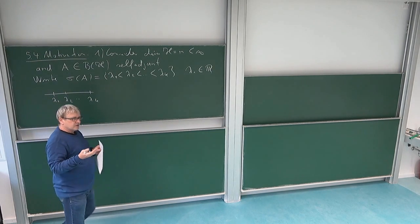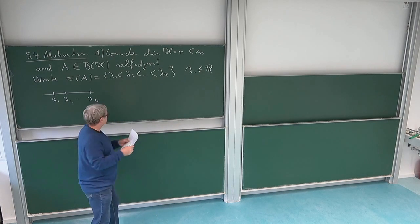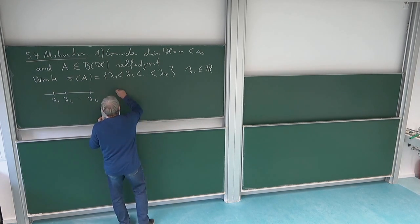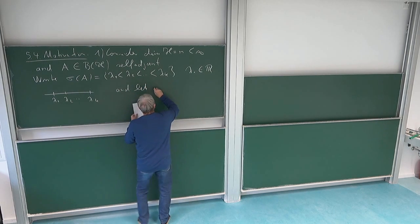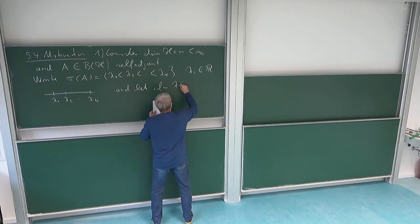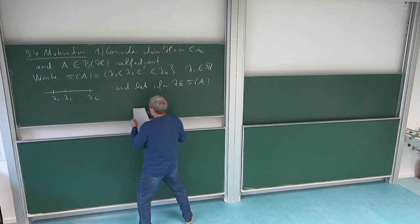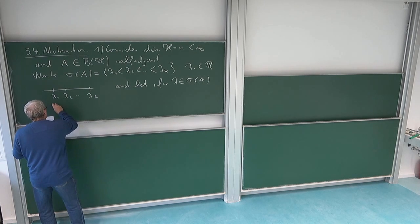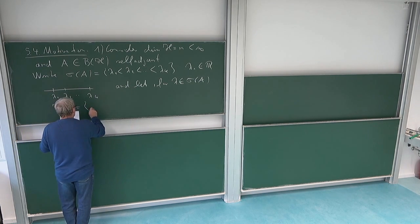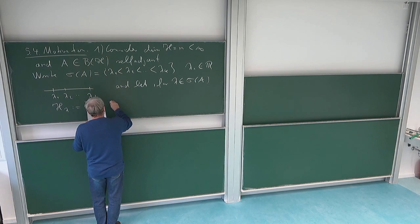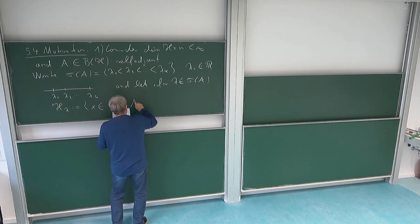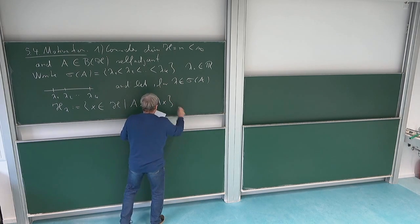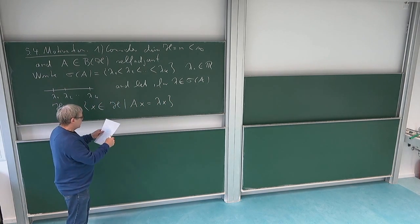We have the corresponding eigenspaces. Let us denote by H_lambda, for each lambda in the spectrum, the eigenspace corresponding to lambda. So H_lambda is by definition the set of vectors in the Hilbert space such that A acting on that vector gives just multiplication by lambda.